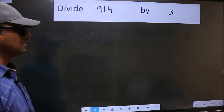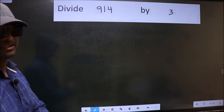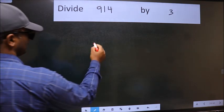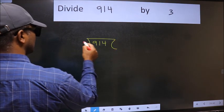Divide 914 by 3. To do this division, we should frame it in this way. 914 and 3 here.